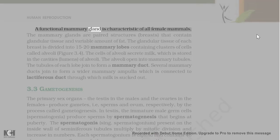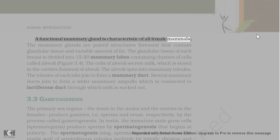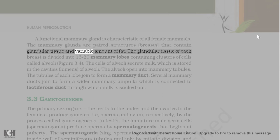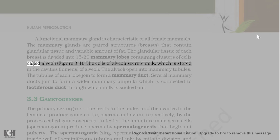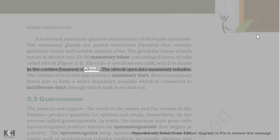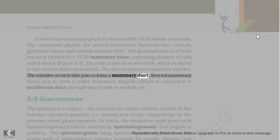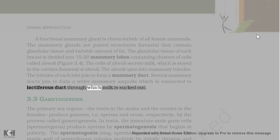A functional mammary gland is characteristic of all female mammals. The mammary glands are paired structures (breasts) that contain glandular tissue and variable amount of fat. The glandular tissue of each breast is divided into 15-20 mammary lobes containing clusters of cells called alveoli. The cells of alveoli secrete milk, which is stored in the cavities (lumens) of alveoli. The alveoli open into mammary tubules. The tubules of each lobe join to form a mammary duct. Several mammary ducts join to form a wider mammary ampulla which is connected to lactiferous duct through which milk is sucked out.